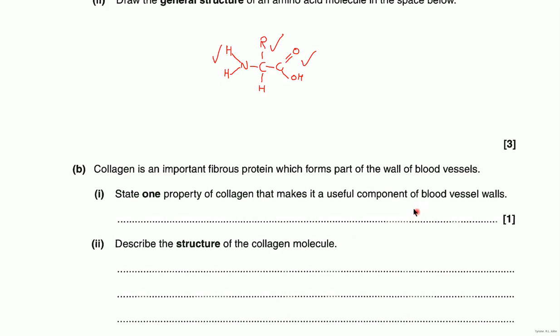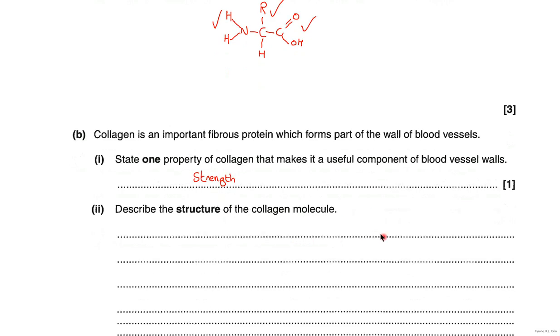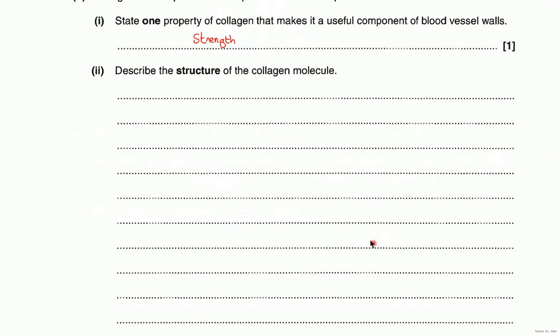Now, collagen: state one property of collagen that makes it a useful component of blood vessel walls. The answer really was strength — that's the function or property of collagen that's important no matter where it is located, because collagen can be found in ligaments and tendons and the strength is important in those structures as well.